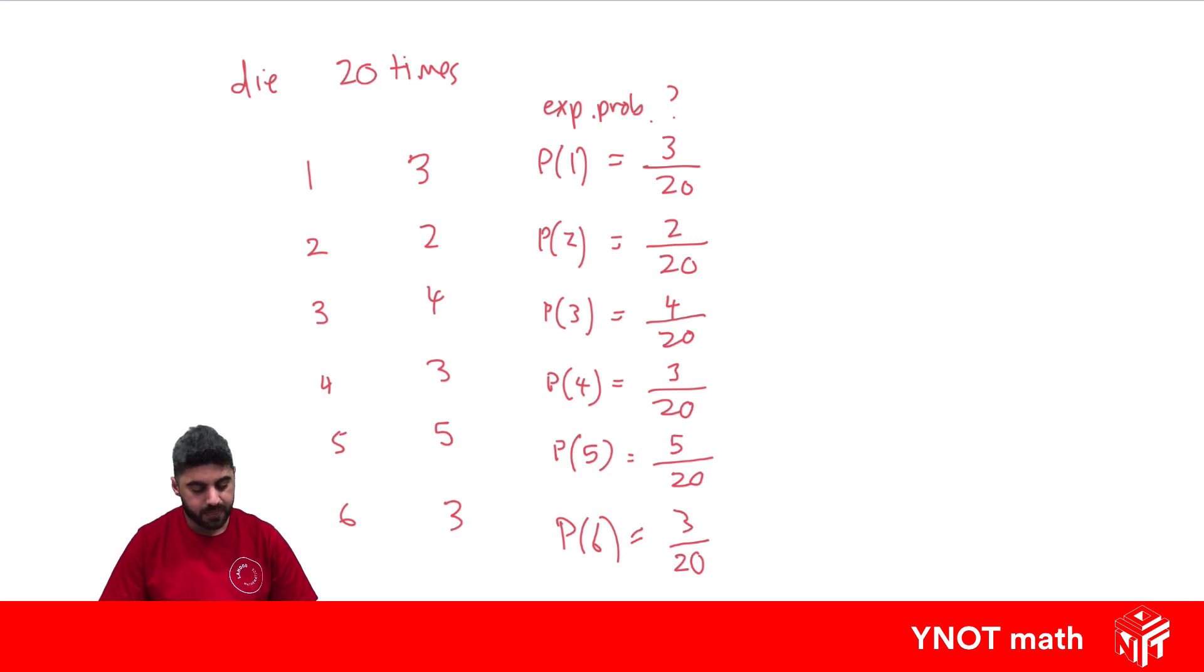We just have to be careful here, and some of these fractions can be simplified. This one we can divide both numerator and denominator by 2, where we get 1 out of 10. This one can be both divided by 4 to get 1 out of 5, and this one, numerator and denominator, can both be divided by 5 to get 1 out of 4. And they're our final experimental probabilities.